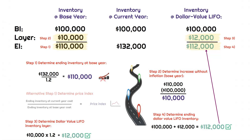After step four, we have our new Dollar Value LIFO inventory balance. If we were to calculate this for the following year, we'd repeat steps one through four — we'll always need an ending inventory amount for the current year, and either the base year or the price index. Keep in mind that if you see this for a second year, you're just applying the same steps. Nothing crazy going on here.